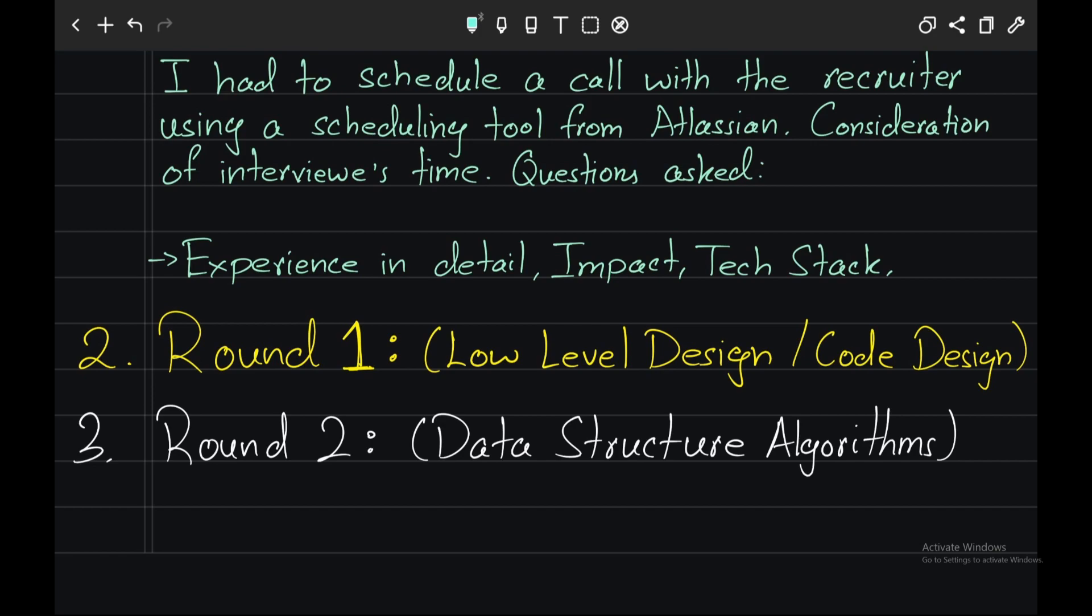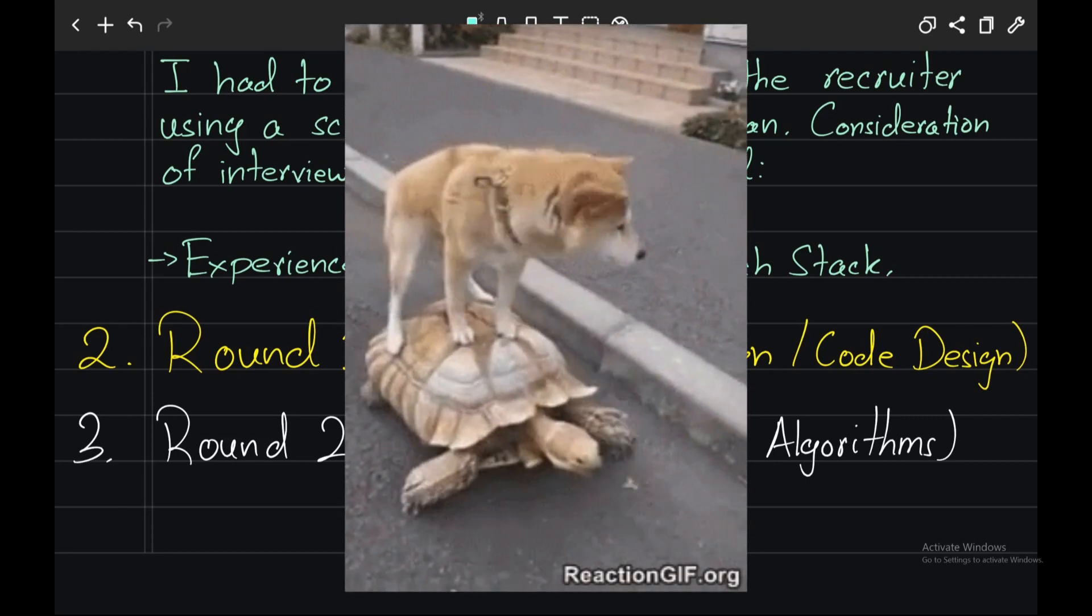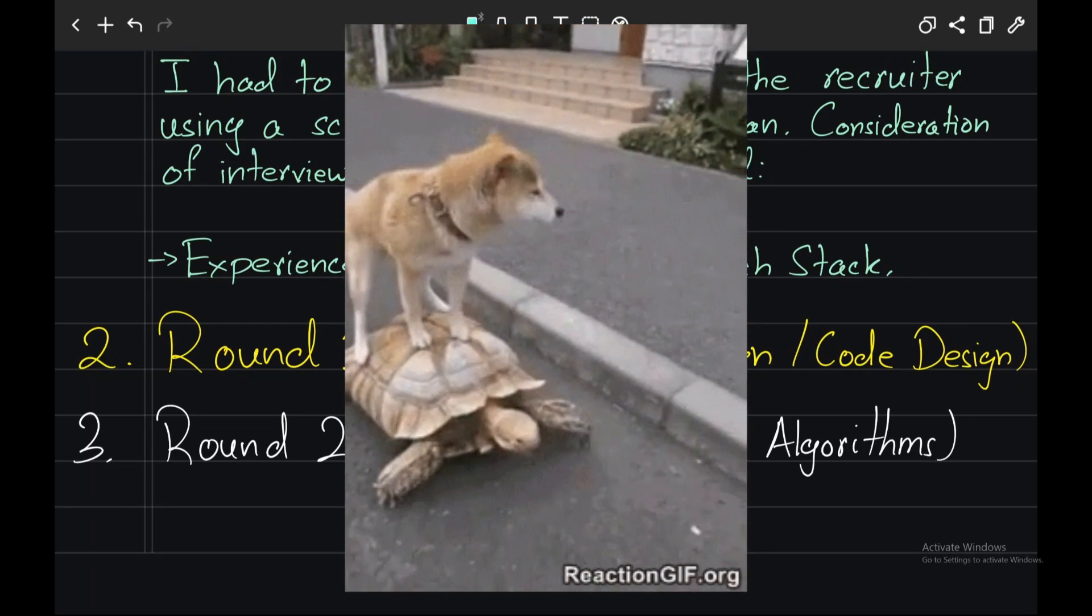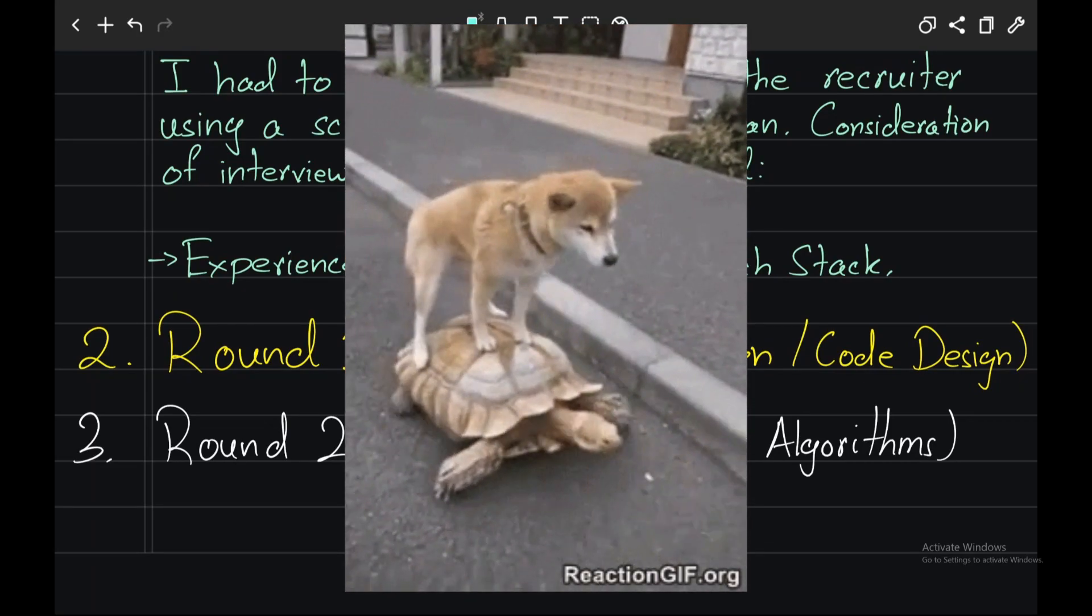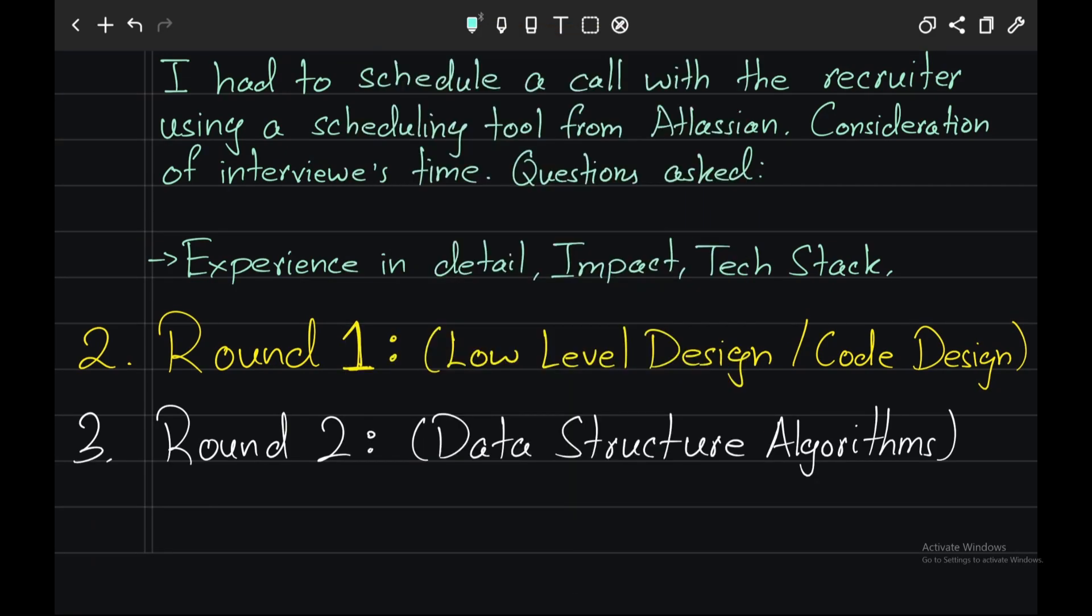So round 2 was the data structures and algorithm round. This round, I was asked a coding question. It was a question based on intervals. The difficulty was anywhere from easy to medium where again the approach of the problem was the key area of focus. I was a little slow to implement the code as in my mind I thought the interviewer was looking for a TDD approach. However, at the end of the interview, the interviewer said that a working code was what he was looking for and I felt that I was going to fail this interview.